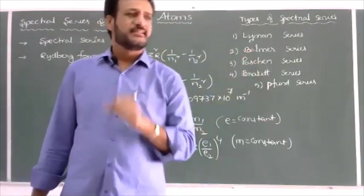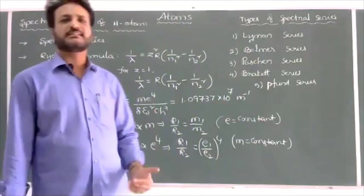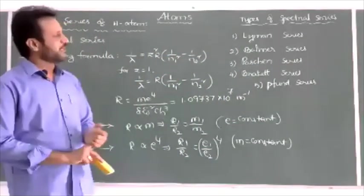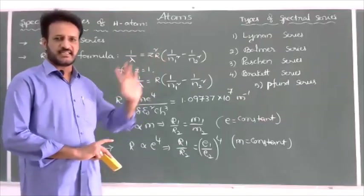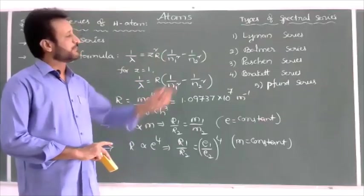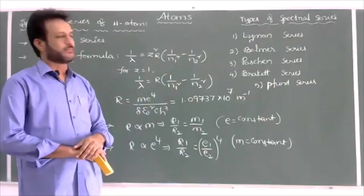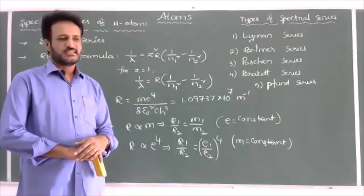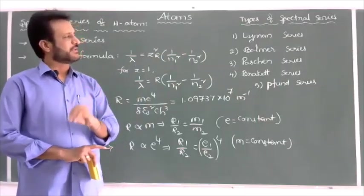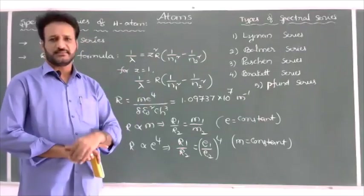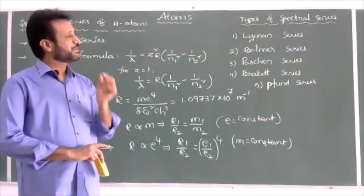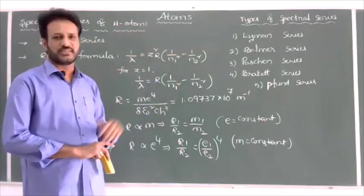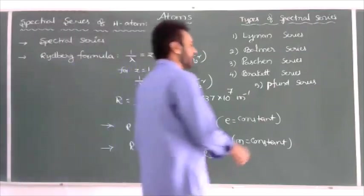For every spectral series we need to discuss: when we will obtain the series, what are the n₁ and n₂ values, what is the least wavelength, what is the highest wavelength, and to which part of the electromagnetic spectrum the particular series belongs.